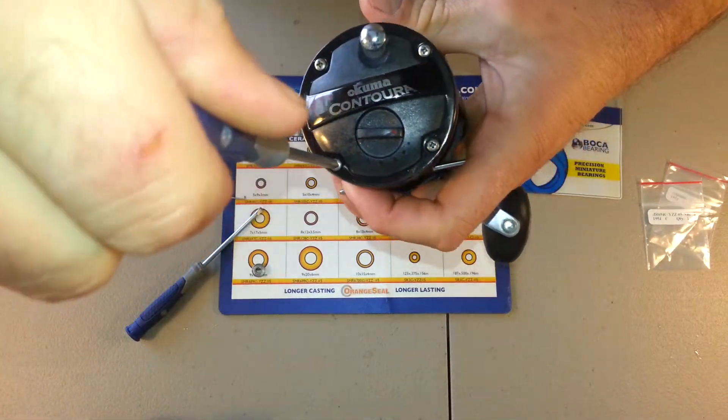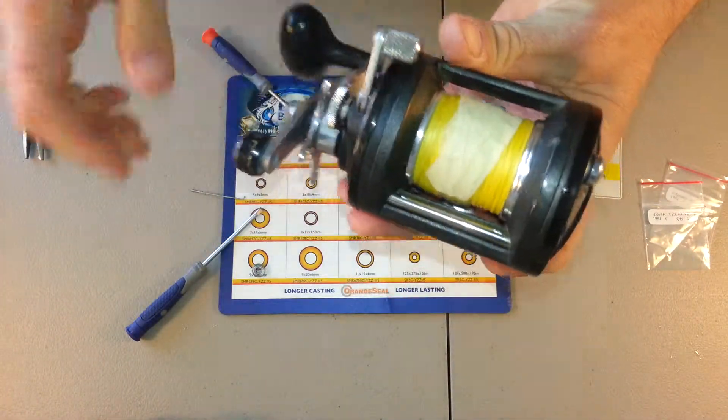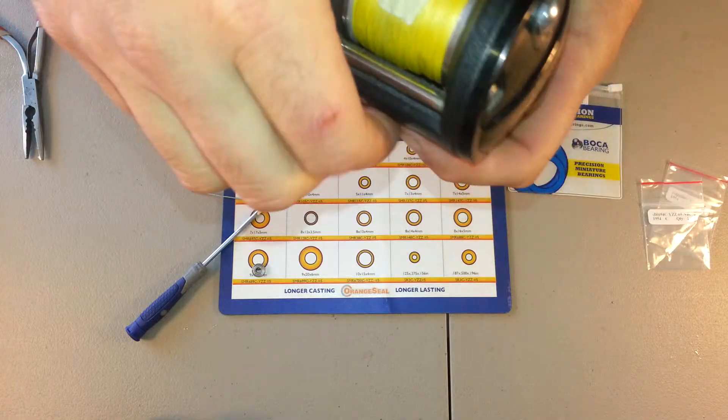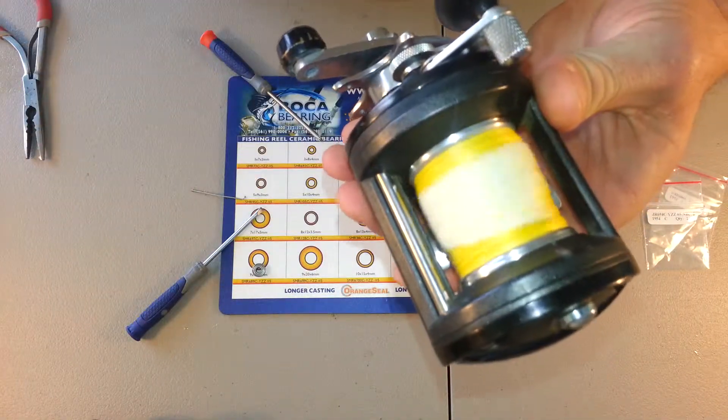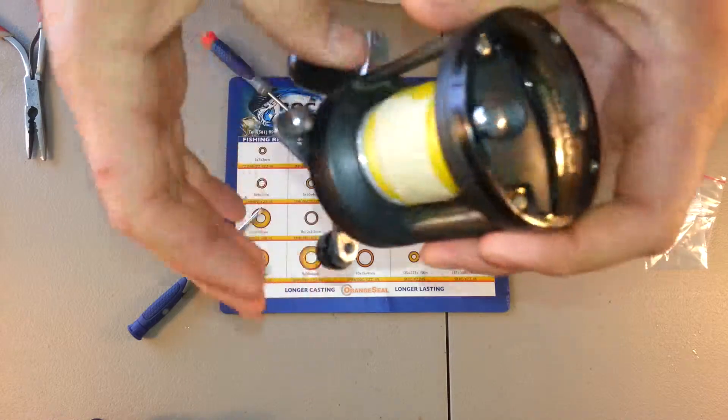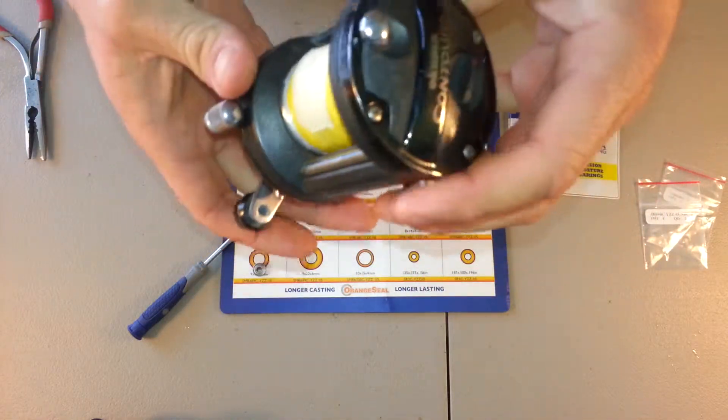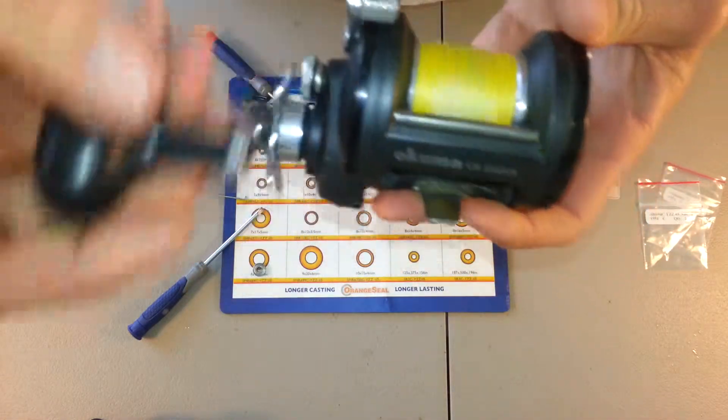So I've installed all the screws back in the side plate, and that's it. Spool spins a lot longer than the factory bearings, and this reel casts a lot further now.